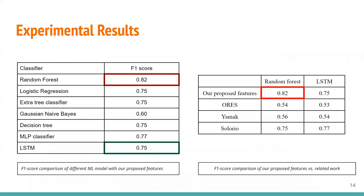Finally, the results. Random Forest performed the best with all our features. LSTM did not perform as well as Random Forest, meaning user-edit-level temporal data did not contribute as much. Comparing our results with competitors, Random Forest had the best performance overall. In terms of LSTM, Solario performed slightly better than ours.